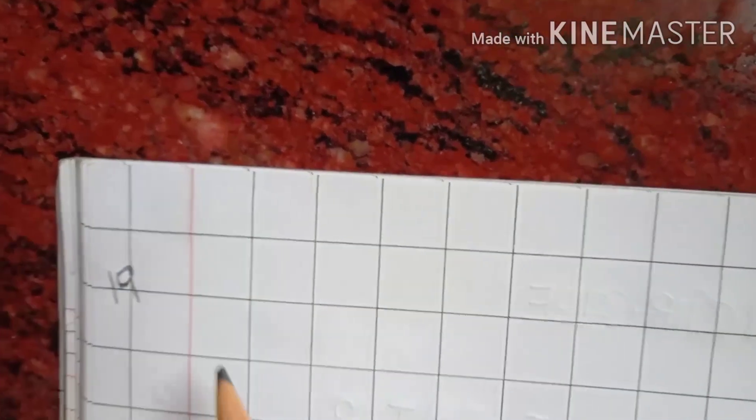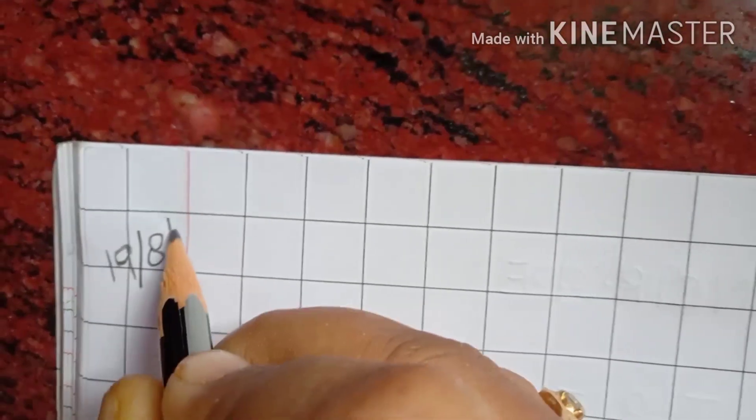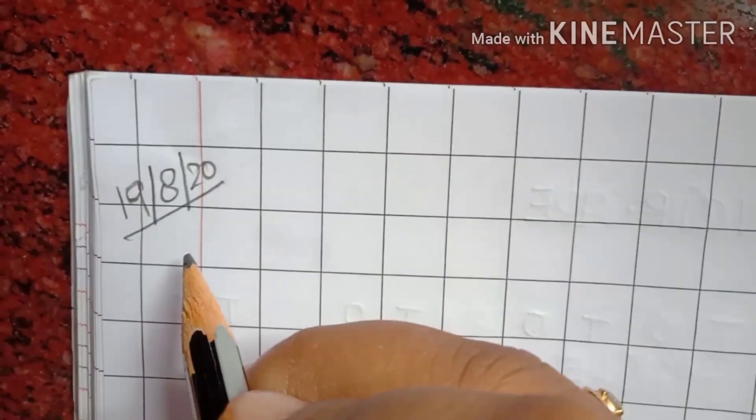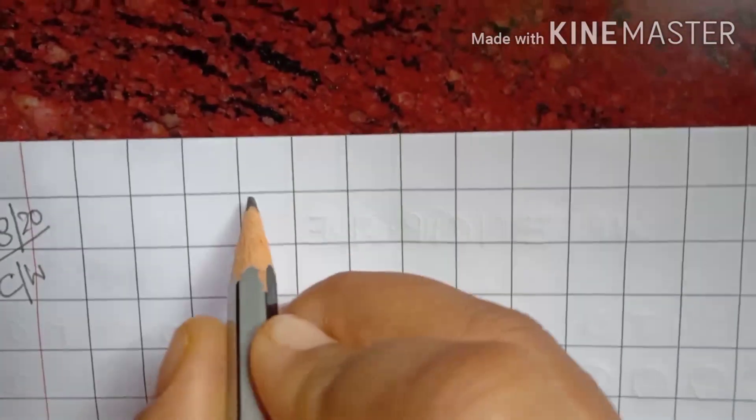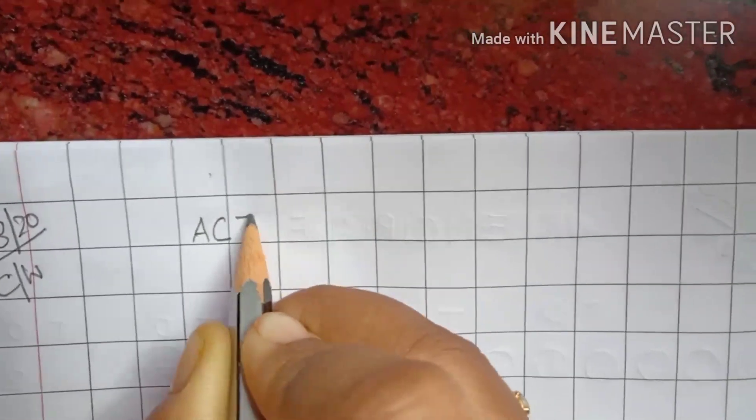First of all, we will write today's date which is 19, 8 and 2020. Then we will write here CW which means classwork. Then on the top we will write here activity.